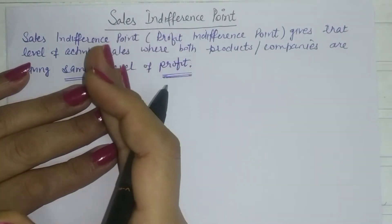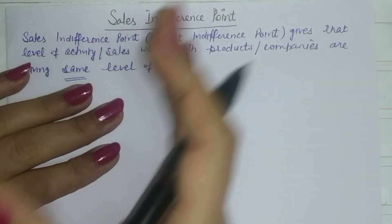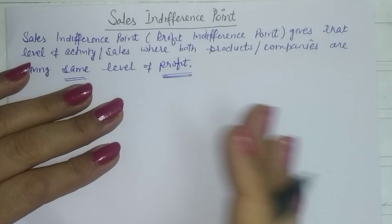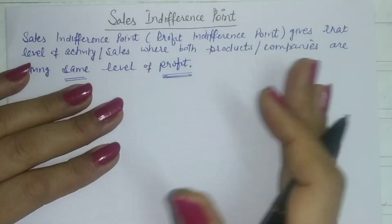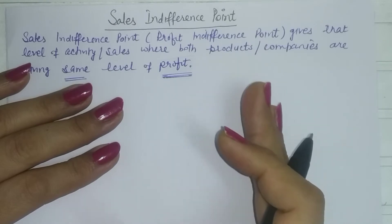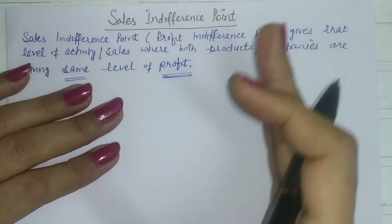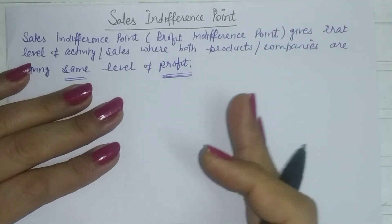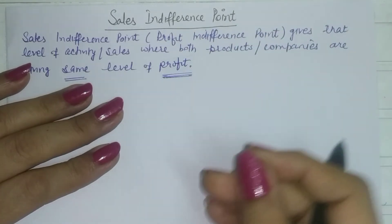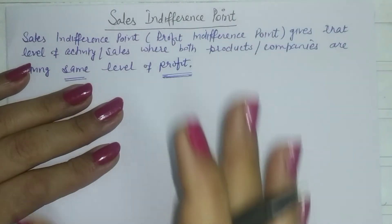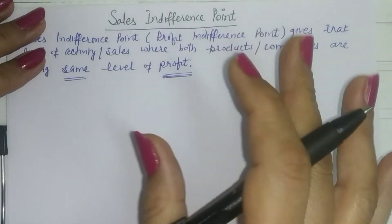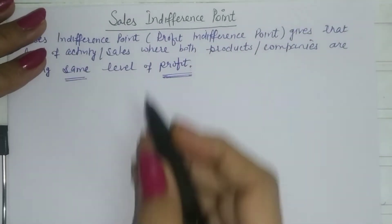Considering product lines A and B, if at a particular level — say 50,000 units of output — both products are giving you the same profit, you can then make your decision based on whether your actual output is going to be above or below this point. Let us see how this helps in management decision making regarding the choice between product lines or companies.